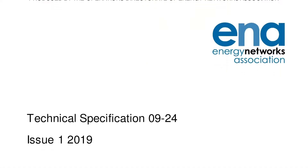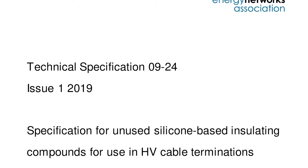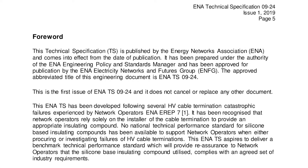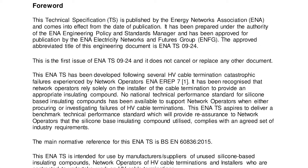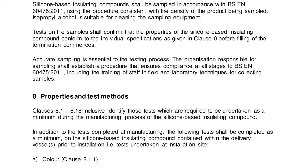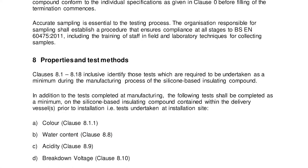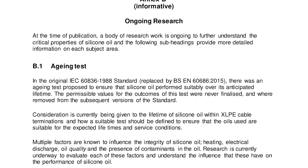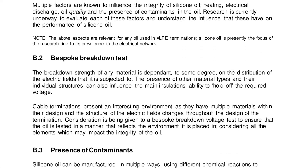The first document we're going to look at is TS 0924. This is a document which covers unused silicone oil for cable terminations. Following some historic failures of fluid fill cable terminations at 132kV, there was a recommendation to consider the specification of the silicone oil used for such terminations. We worked closely with the member companies to review existing standards for unused silicone oil specification and we developed a new ENA technical specification which covers the requirements and tests for unused silicone based insulating compounds.